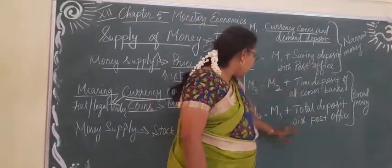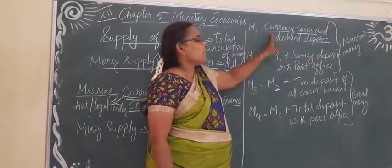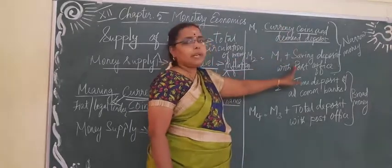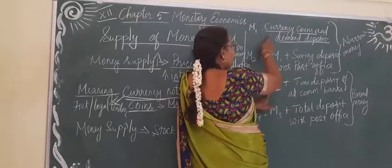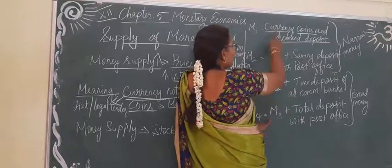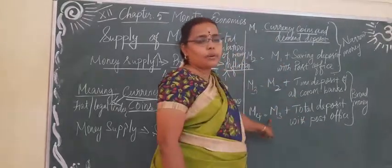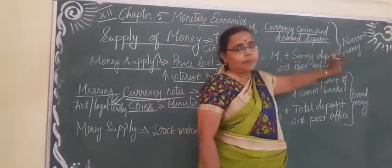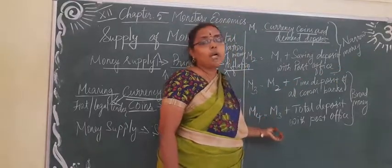M4 money includes M3 plus total deposit with the post office. So all things are included in M4: M1 covers currency and coins; M2 includes M1 plus saving deposits; M3 includes M1, M2, and time deposits of commercial banks; M4 includes all three plus total deposit with the post office. M1 and M2 are called narrow money, and M3 and M4 are called broad money.